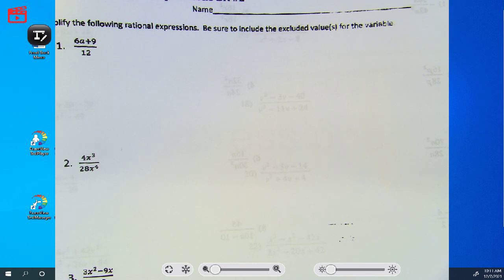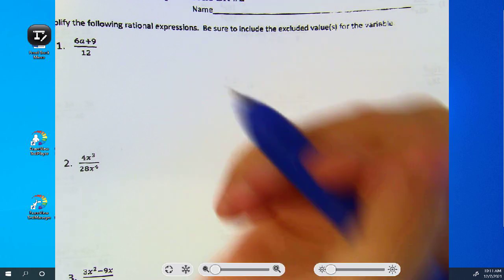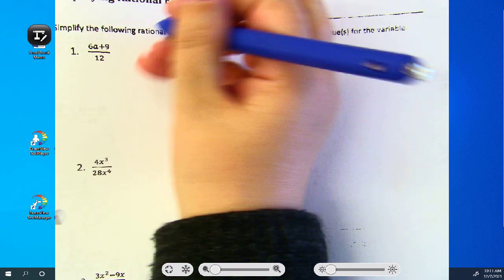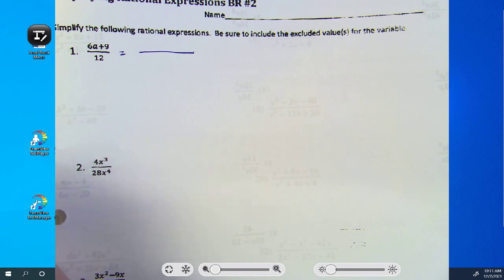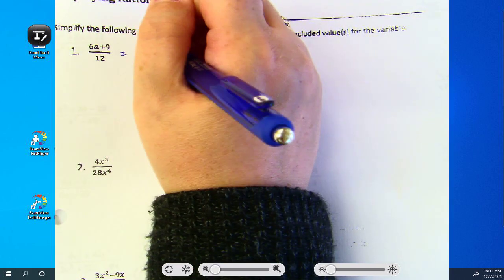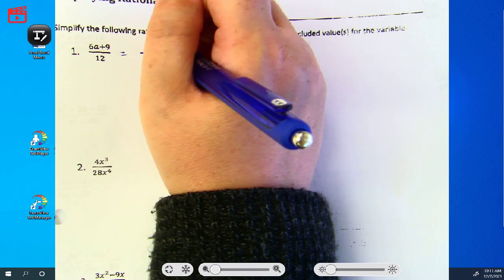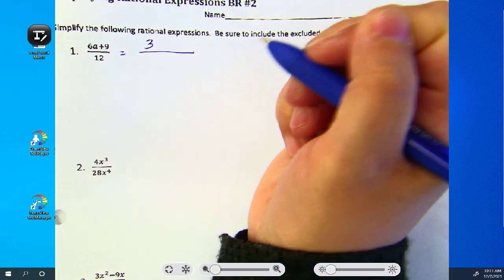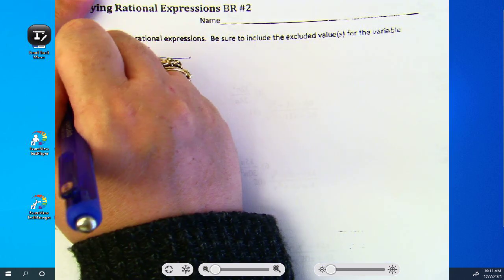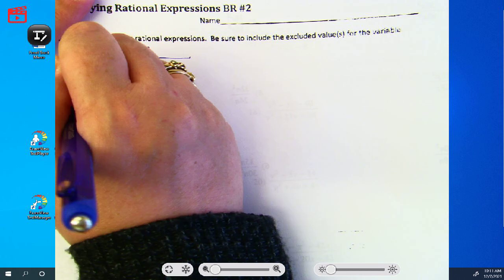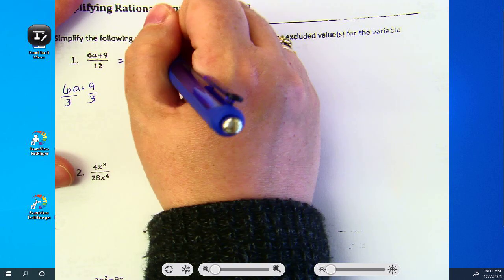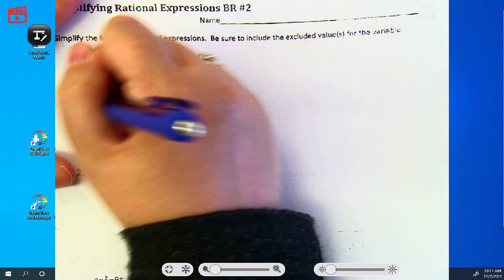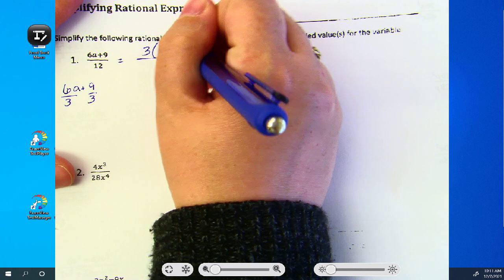Looking at these four problems, number one, what did you see we could do in the numerator? Factor the GCF, which is three. When you divide your GCF out, six divided by three is two and you have an a. Nine divided by three is three.